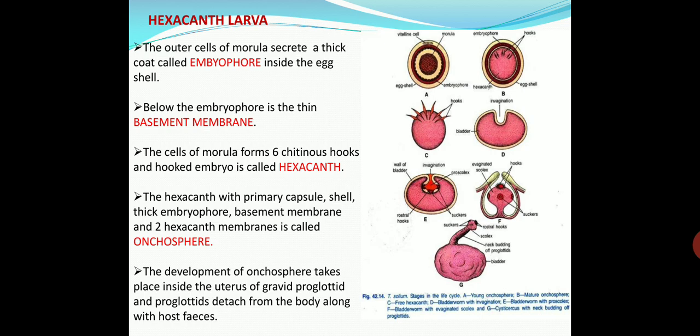The next stage is the hexacanth larva. The outer cells of the morula secrete a thick striated coat made up of chitin, which hardens into a secondary shell called the embryophore, present inside the eggshell. Below the embryophore there is a basement membrane. The inner cells of the morula form an embryo which acquires six chitinous hooks posteriorly. This hooked embryo is called the hexacanth — hexa meaning six — with the six chitinous hooks formed from the inner cells of the morula.